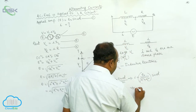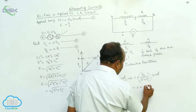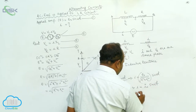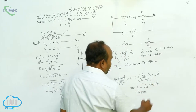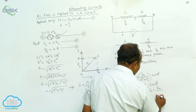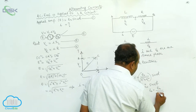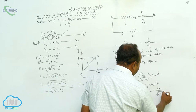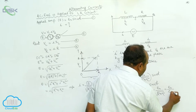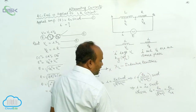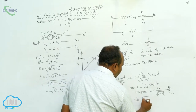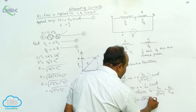This is compared with i equals i₀ sin(ωt). Therefore, i₀ equals E₀ divided by the square root of R² plus XL², which equals E₀ divided by Z_LR. Therefore, Z_LR equals the square root of R square plus XL square.